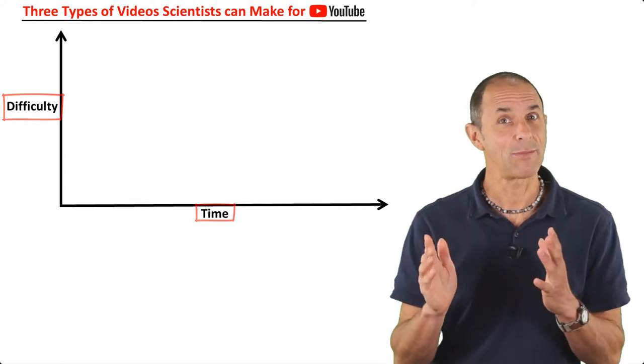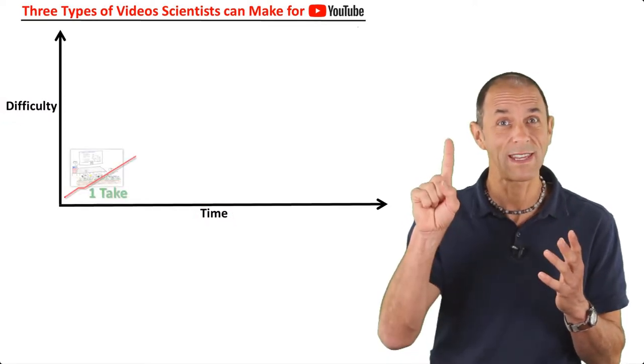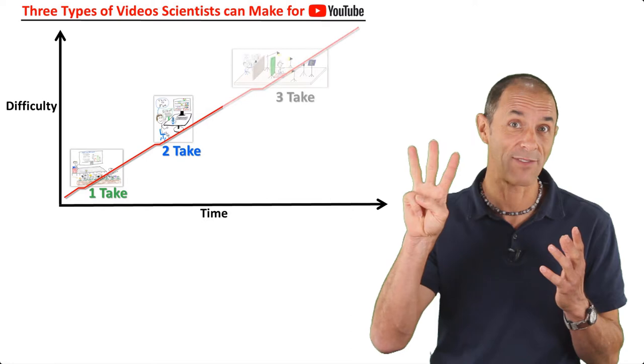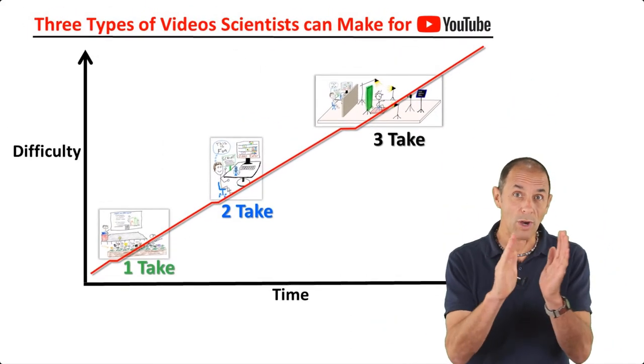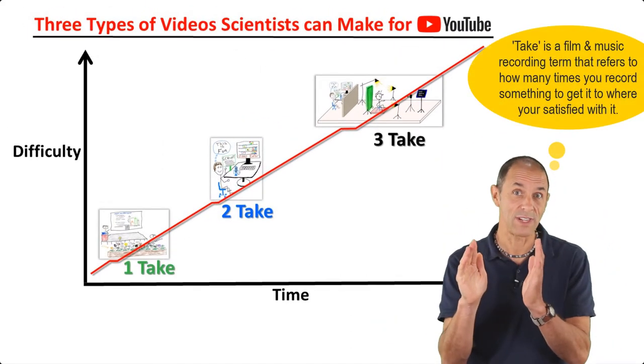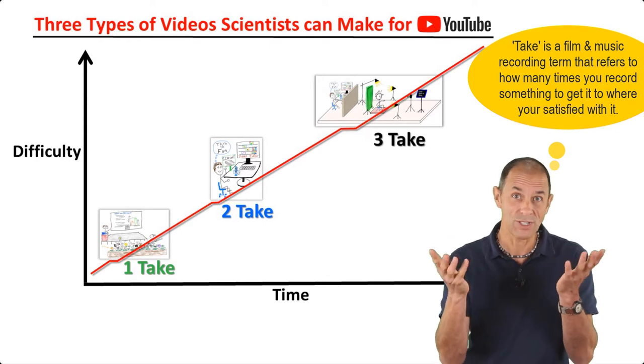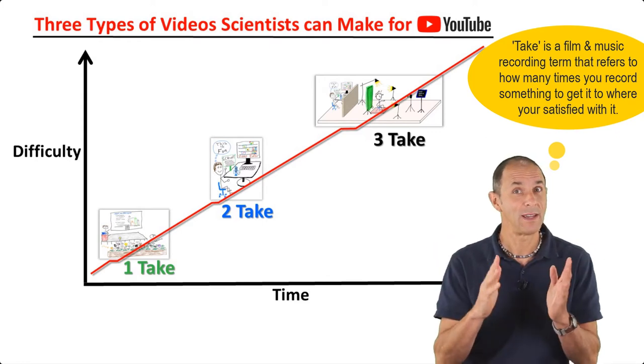To keep it simple, I'll call them the one take, the two take, and the three take video. I'm going to walk you through the main characteristics of each of these to help you figure out which type you might want to make and what to expect.